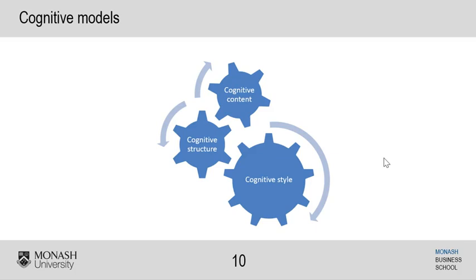The first aspect is cognitive content - basically what the executive knows, what information and knowledge they draw on in their minds. The second is structure - the way their thinking, knowledge and beliefs are arranged in their minds, how ideas are connected, and what process or logic they put into play. The third is cognitive style - how an executive's mind works, what aspects they tap into and how they approach certain activities. This varies from person to person; it's about having the parameters in play to understand how top executives work through strategic choices and decision-making, which is a fairly complex phenomenon.